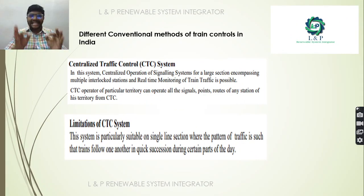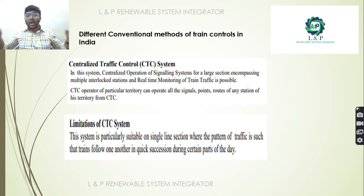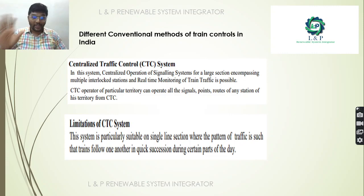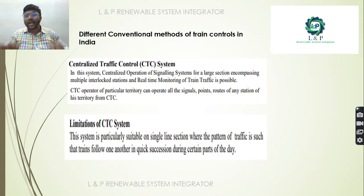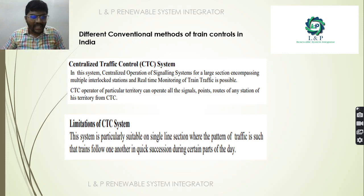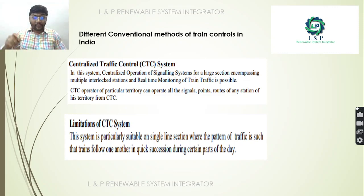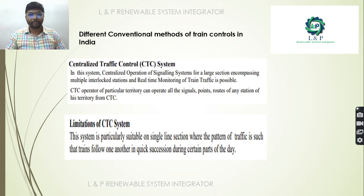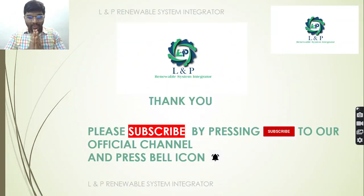The Centralized Traffic Control (CTC) system can be used for large sections encompassing multiple interlock stations, with real-time monitoring of traffic signals. A CTC operator in a given territory can operate all signals, points, and routes of any station in that territory. However, this system is particularly suitable for single line sections where trains follow one another in quick succession during certain parts of the day.